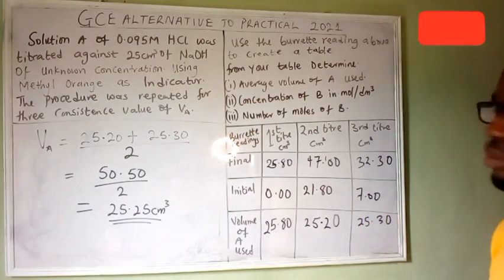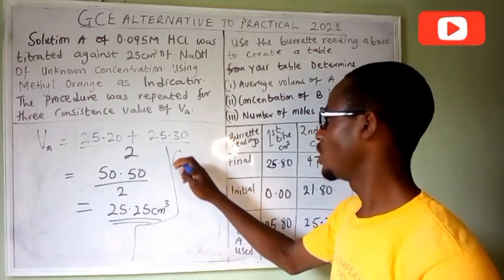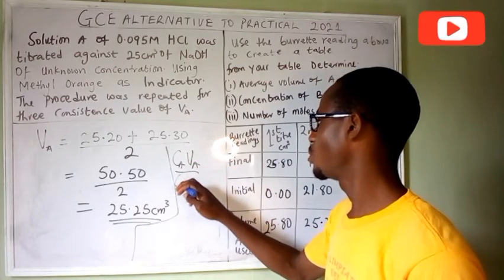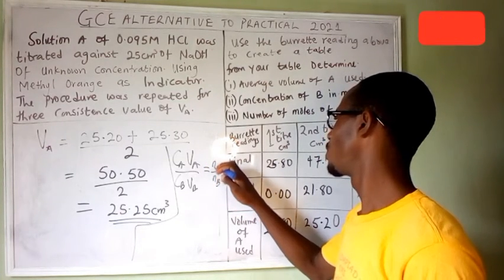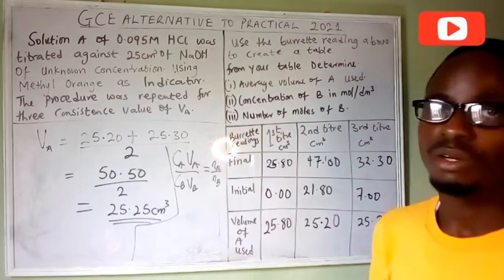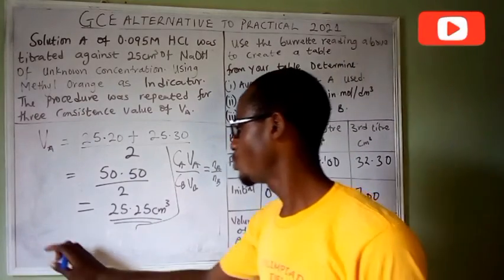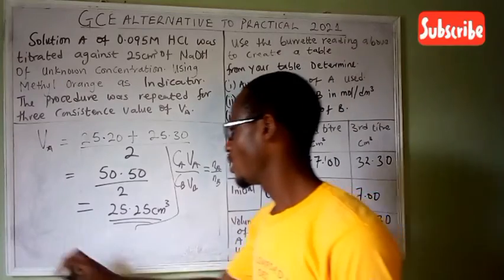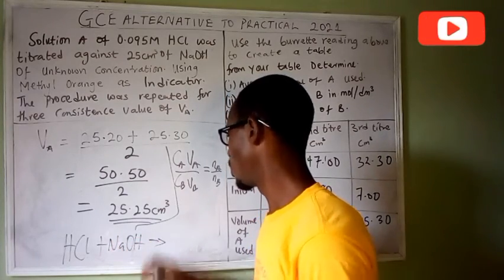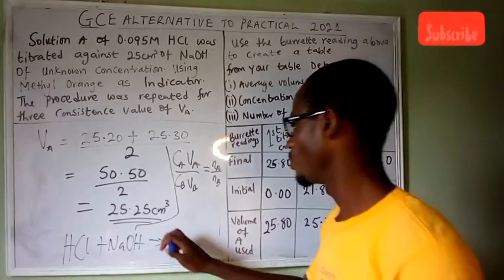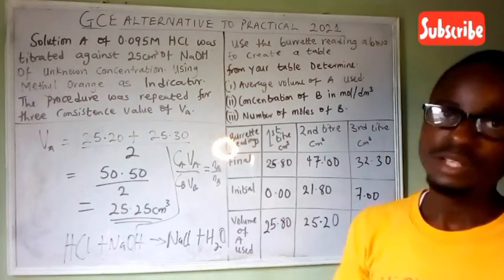The next question asks us to find the concentration of B in mol per dm³. To do that, we use the formula: CaVa / CbVb = na / nb. To get na and nb you write the equation for the reaction. The reaction is between hydrochloric acid and sodium hydroxide: HCl + NaOH → NaCl + H₂O. The equation is balanced, so the mole ratio of HCl to NaOH is 1:1, meaning na = 1 and nb = 1.